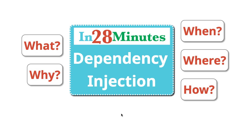Dependency injection is not something which is introduced by Spring Framework. Dependency inversion principle is one of the core principles when you are developing object-oriented software. Whenever we develop object-oriented programs, you need to follow something called SOLID principles. If you want to learn more about the SOLID principles, check out the link in the description. In the SOLID principles: S stands for Single Responsibility Principle, O for Open Closed Principle, L for Liskov Substitution Principle, I for Interface Segregation Principle, and D stands for Dependency Inversion.